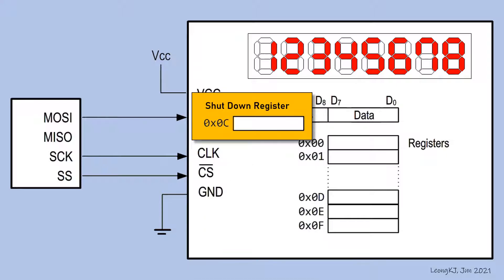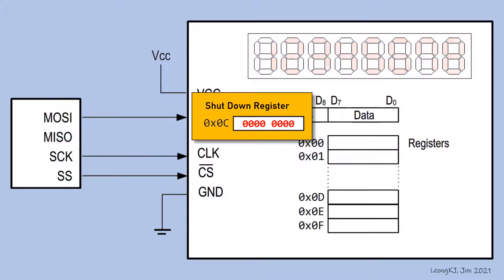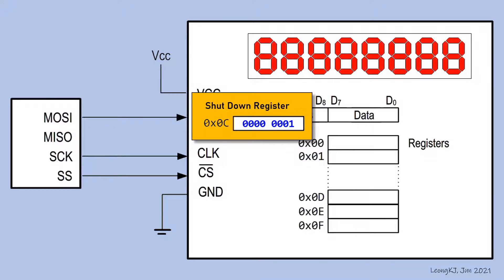Register 0C is called the shutdown register. If its content is all 0, the display shuts down. When the content is 00000001, it goes into normal operation mode.